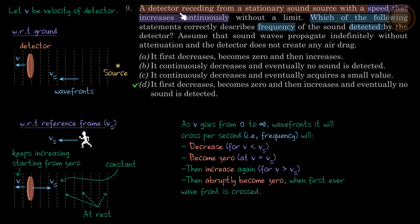There is a detector receding from a stationary sound source with a speed that increases continuously. I have guessed that it started from zero and then its speed is going up. Which of the following statements correctly describe the frequency of the sound wave detected by the detector?